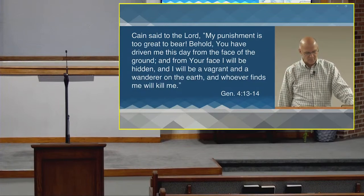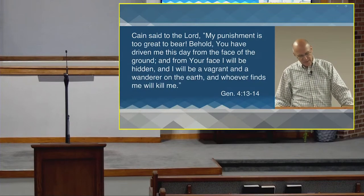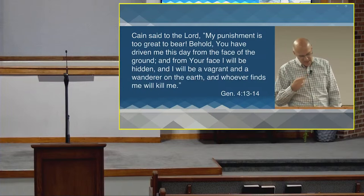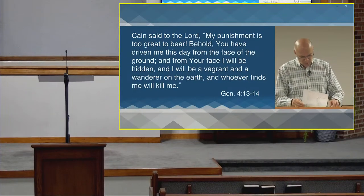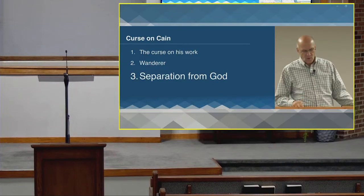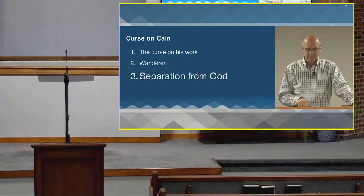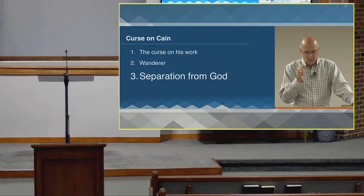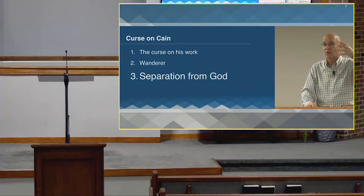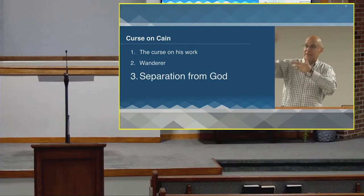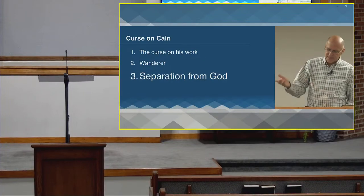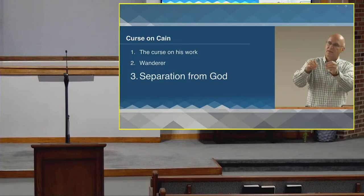Cain finally cries out for help. He's less proud now, less rebellious, and comes to grips with the punishment he needs to bear. He reviews the punishment, and in his words we see the third and most painful part of the curse: he will no longer behold the face of the Lord. He will no longer commune with the Lord as he did in the past. Before he was rebellious and arrogant, but at least there was a relationship. Now even that is taken away.